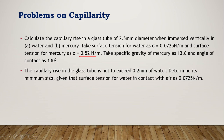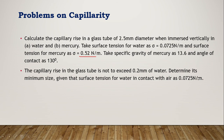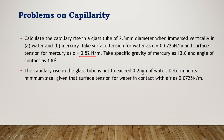Numerical problem 2: The capillary rise in a glass tube is not to exceed 0.2 mm of water. Determine the minimum tube diameter. Here h = 0.2 mm = 0.2 × 10⁻³ m is given; find d. Rearranging the formula: d = 4σ / (ρgh). Substitute σ = 0.0725, ρ = 1000, g = 9.81, and h = 0.2 × 10⁻³ to calculate the minimum diameter.